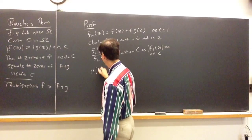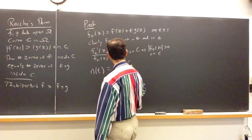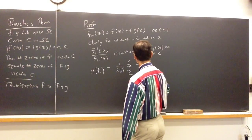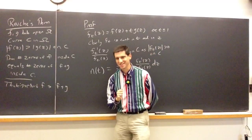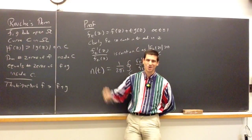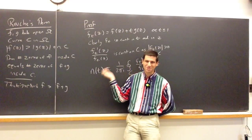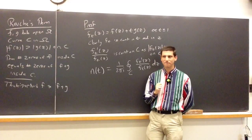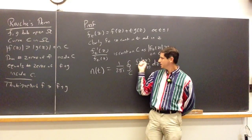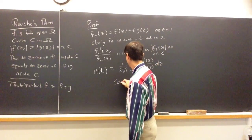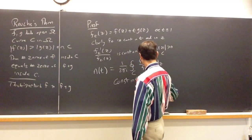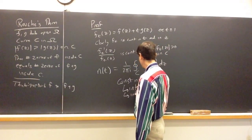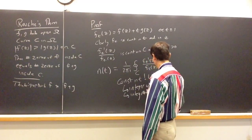Now consider the function N(t) = (1/2πi) ∫_C f_t'(z)/f_t(z) dz. This function is actually constant in t — even though it looks like it has messy t-dependence. Why? It's integer-valued, the integrand is continuous, and C is a nice closed curve of finite length. A continuous integer-valued function must be constant.